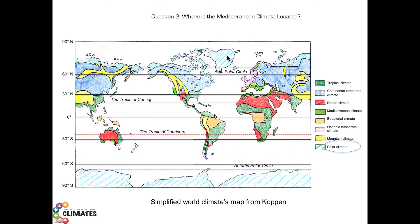Other climates, on the other hand, are more widely distributed. For example, the tropical climate in dark green on the map. This also concerns the Mediterranean climate in pistachio green. This climate is located, as suggested by its name, around the Mediterranean Sea, but can also be found in other places on the Earth, such as California and South Africa.